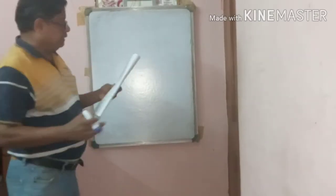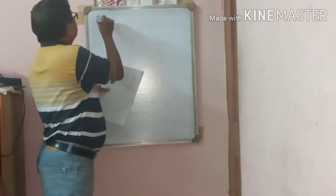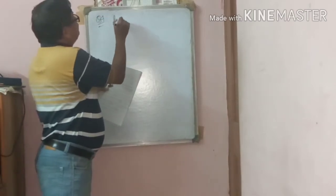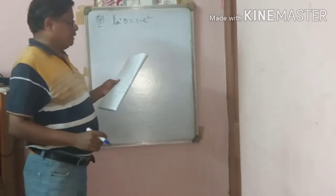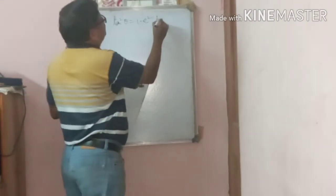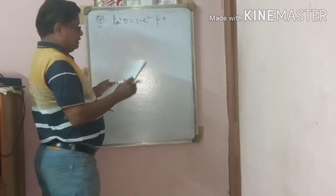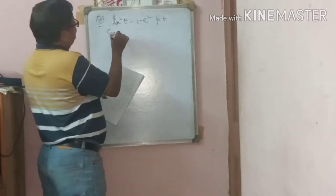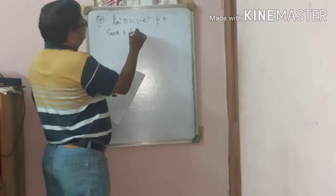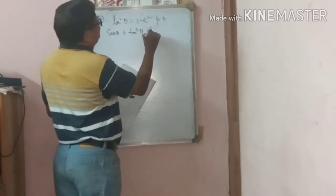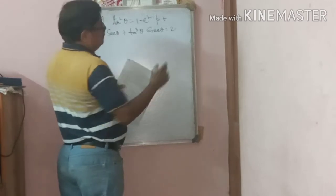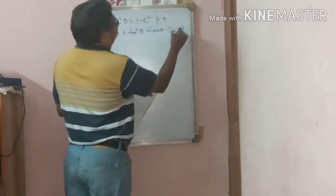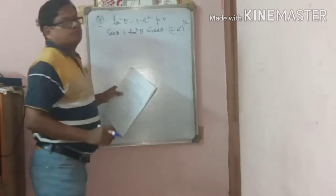Question number 4: Given tan²θ = 1 − a², prove that secθ + tan³θ · cosecθ = (2 − a²)^(3/2).